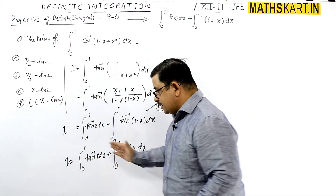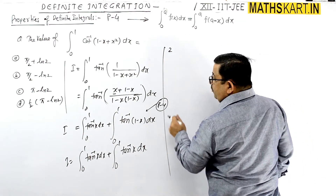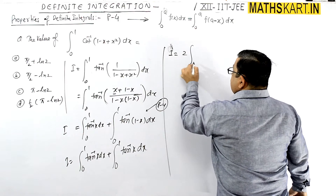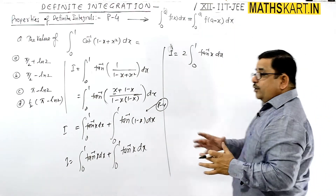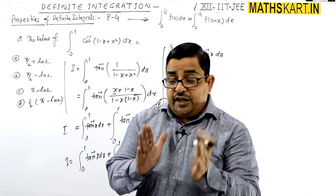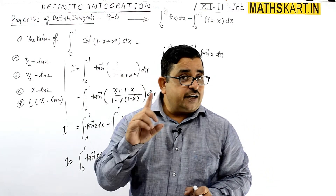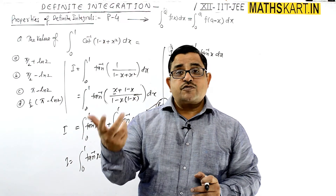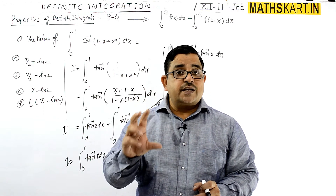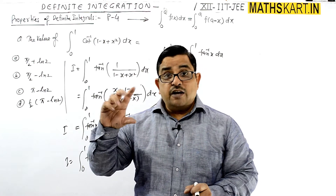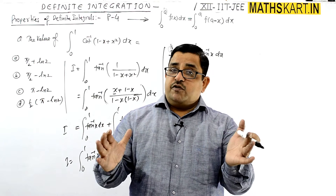So it can be written as: i equals 2 times of the integral from 0 to 1 of tan inverse x dx. We learned in indefinite integration that for log x, tan inverse x, or similar functions, we use the product formula — taking tan inverse x as the first function and 1 as the second function.